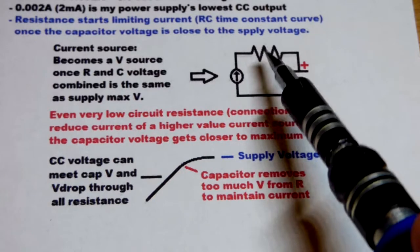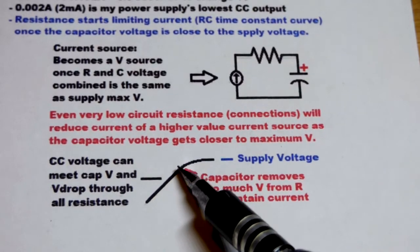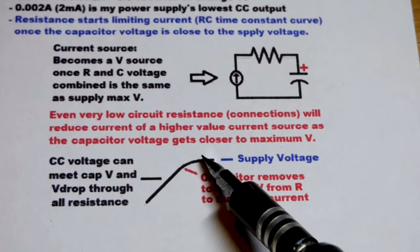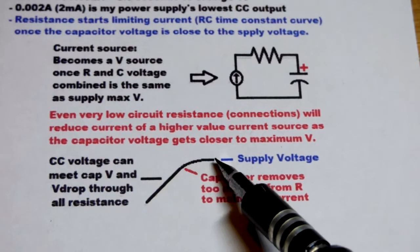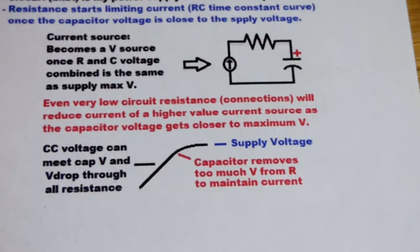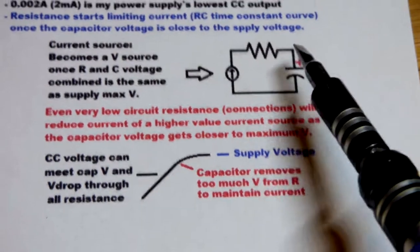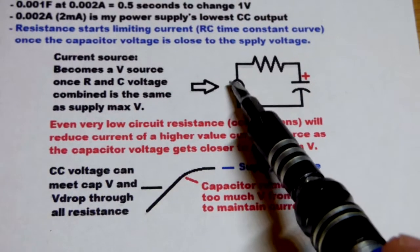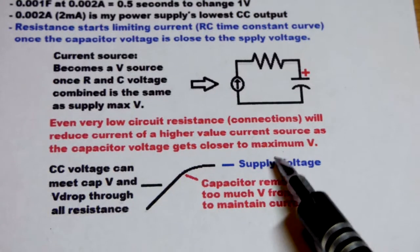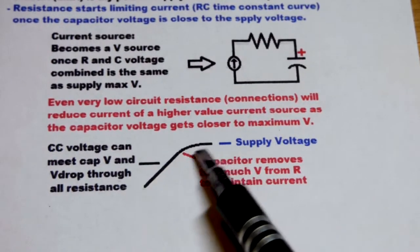The voltage is dropping across the resistance, so it can't keep the current as high anymore. As voltage across the resistor goes down, current goes down, so the capacitor is charging slower. It's taking longer for the voltage to go up. It does a curve. That's when you know that the capacitor voltage is removing too much voltage from the supply for it to maintain that current.